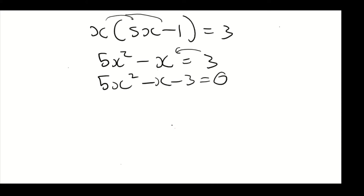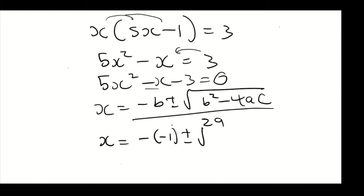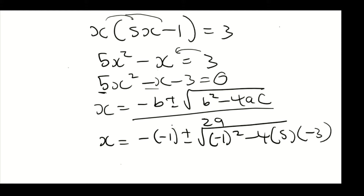Because we can't factorize this expression, we're going to use the quadratic formula: x equals minus b plus or minus the square root of b squared minus 4ac, all over 2a. So x equals minus — our b is minus 1 — so it's minus 1 plus or minus the square root of minus 1 squared minus 4 times 5 times minus 3, divided by 2 times 5.